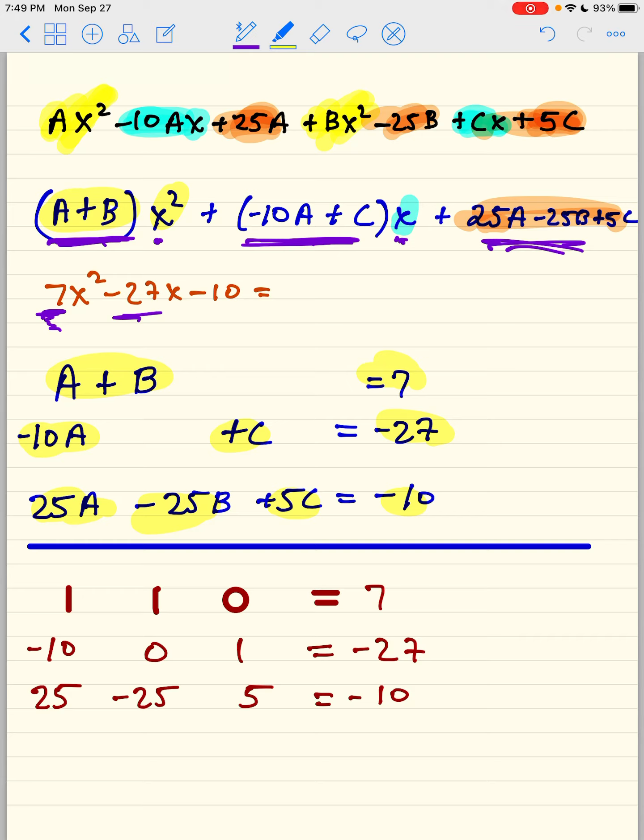What I did here now was I created an augmented matrix using 1 in front of the A, negative 10 in front of the A, 25 in front of the A. For B, we have 1, 0, negative 25. And for C, we have 0, 1, 5.